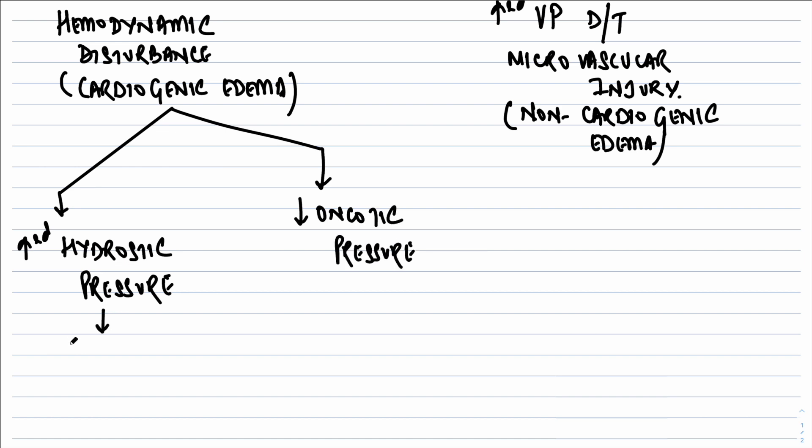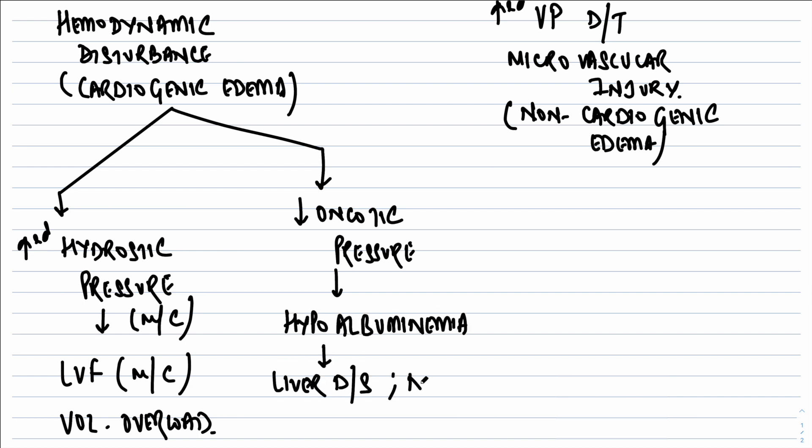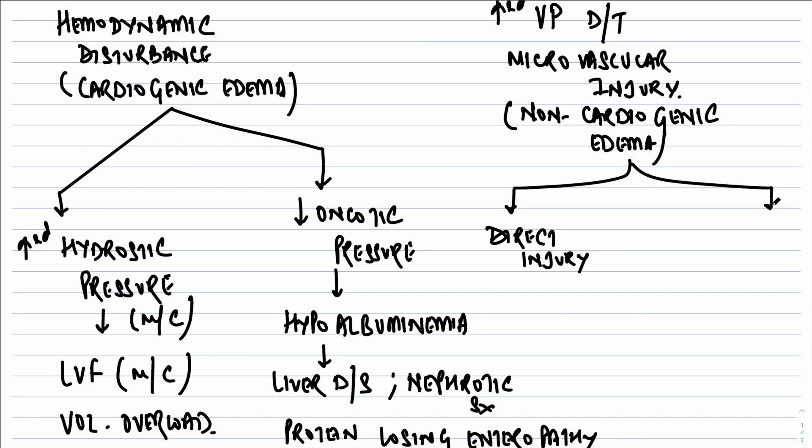Causes of hemodynamic edema include increased hydrostatic pressure and decreased oncotic pressure. Increased hydrostatic pressure is the more common cause, occurring due to left ventricular failure most commonly and other conditions with volume overload. Decreased oncotic pressure occurs because of hypoalbuminemia secondary to liver disease, nephrotic syndrome, and protein-losing enteropathy.